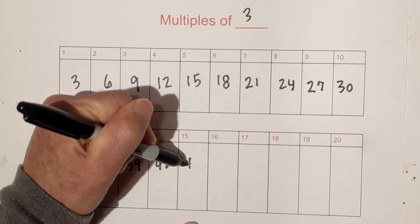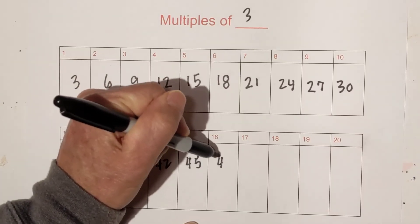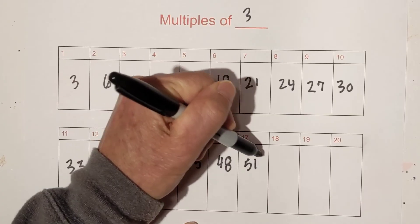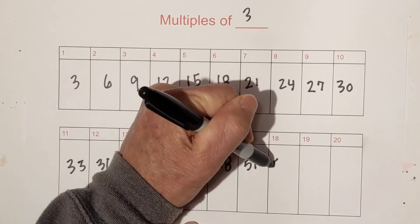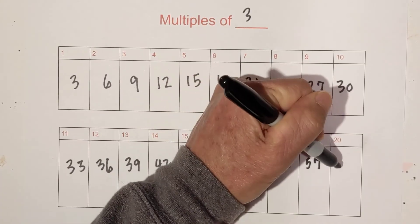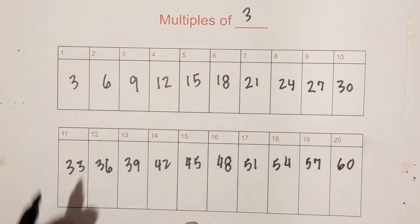15 times 3 is 45, 48, then we have 51, 18 times 3 is 54, 57, and then 20 times 3 is 60.